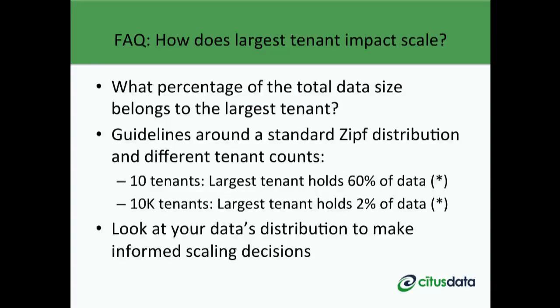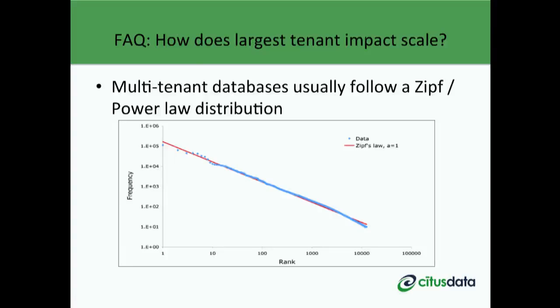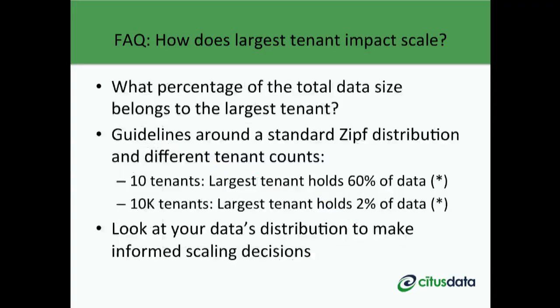When migrating a single-machine database, the important question is: what percentage of total data does your largest tenant hold? If your database serves 100 tenants and the largest holds 10% of the data, this approach helps you scale by 10x. Assuming a standard Zipf distribution, when you have 10 tenants the largest holds about 60% of the data; when you have 10,000 tenants, the most popular holds about 2% and you can scale to 50x. Of course, these are general guidelines — the best way to tell is by looking at your own data.